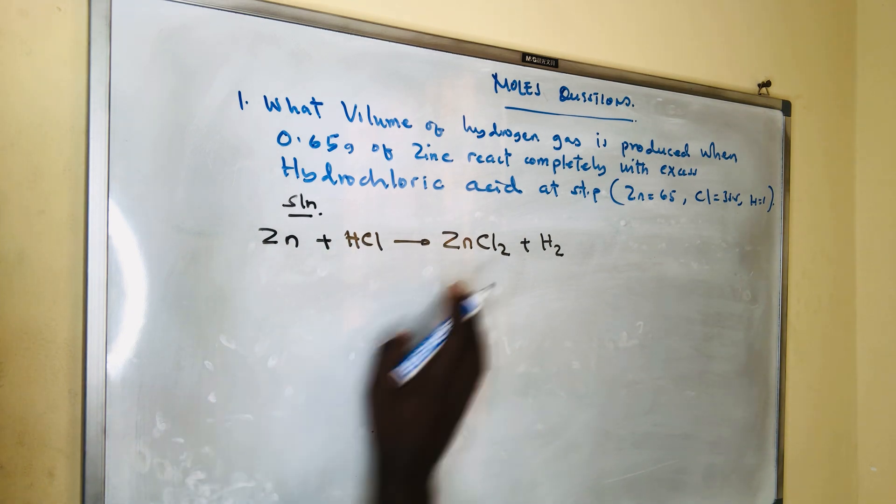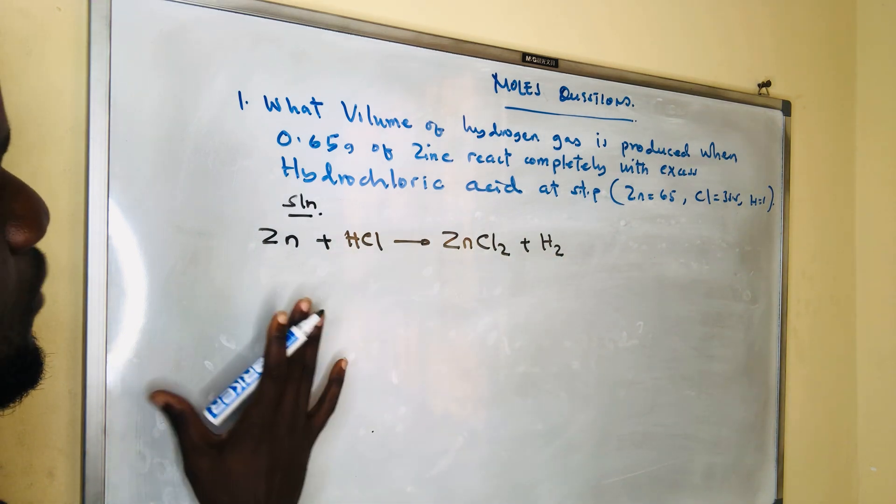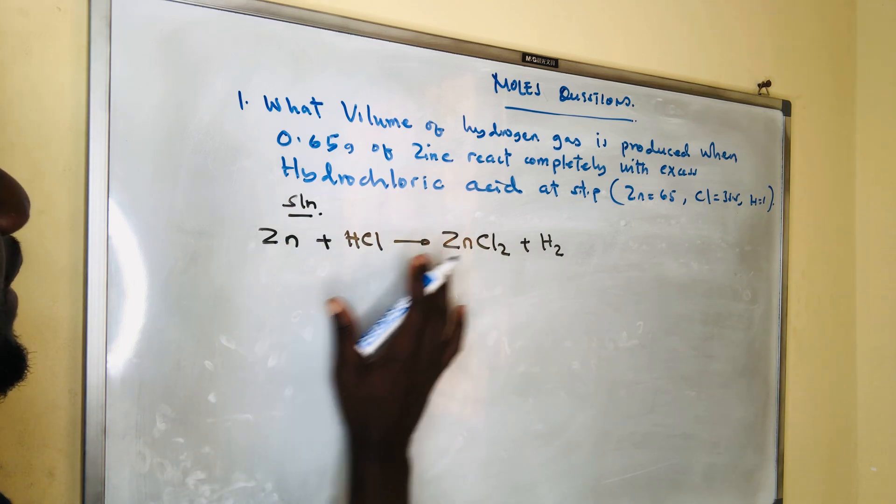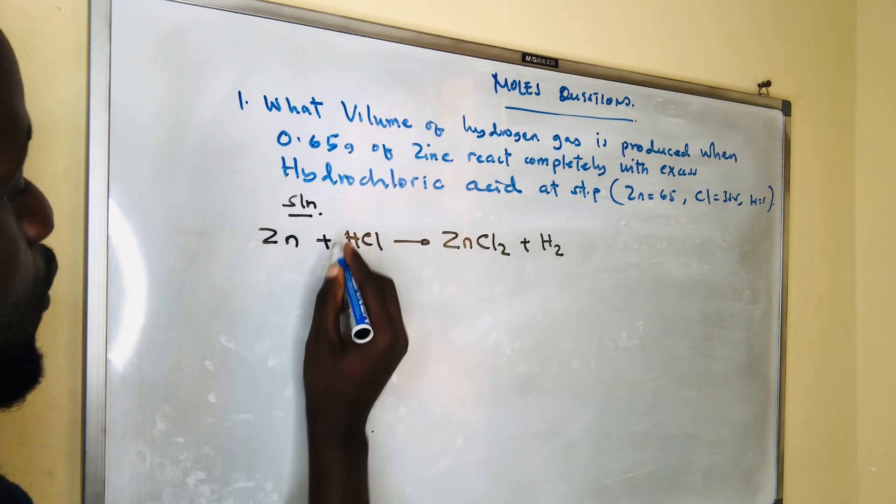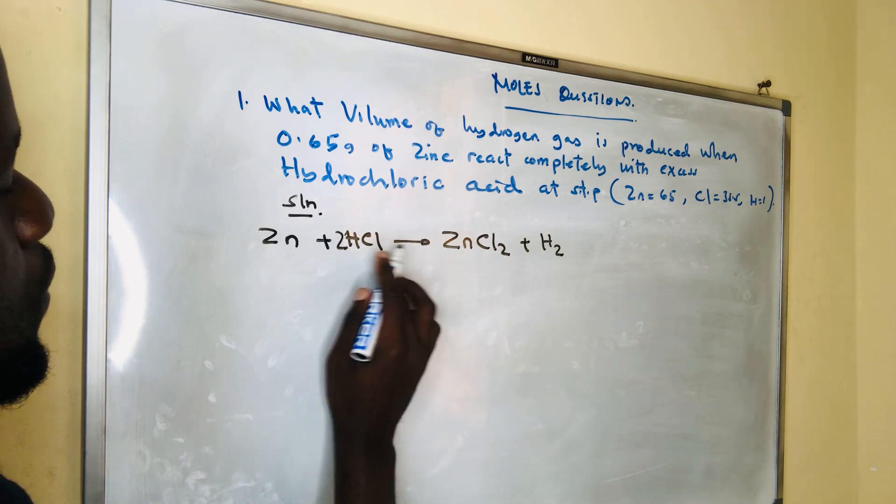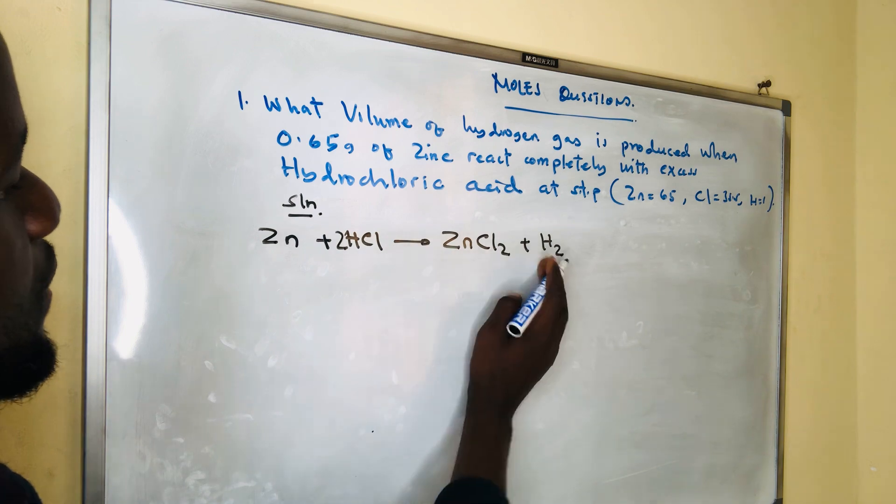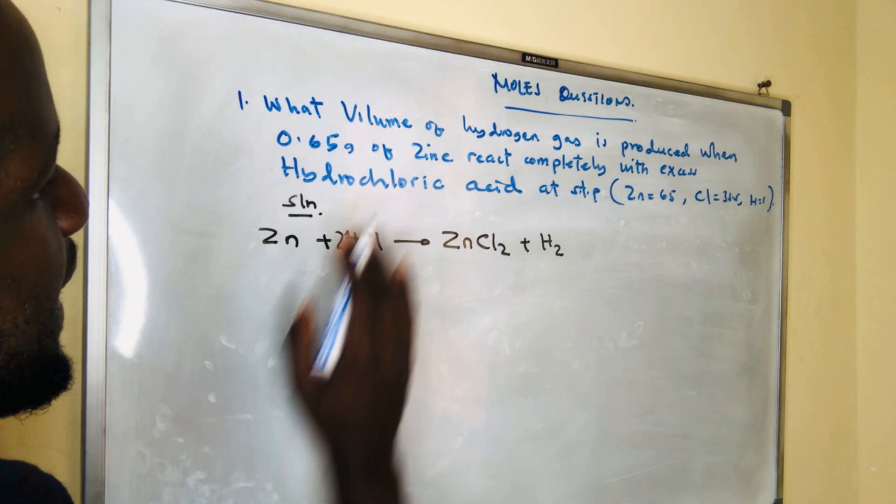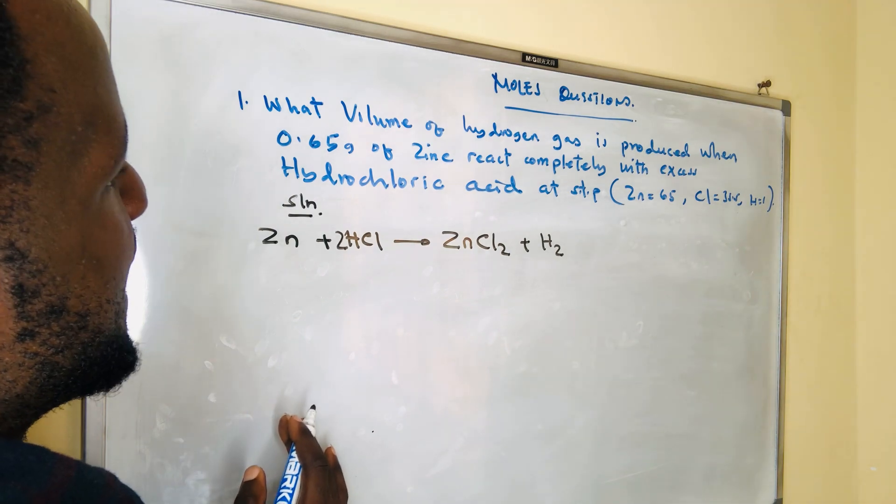Then you have to balance the number of atoms. We have one zinc, one zinc; one chlorine, two chlorine. To balance, we need two chlorines, two hydrogens. Then you have the balanced equation: Zn + 2HCl → ZnCl₂ + H₂.